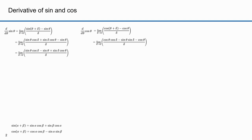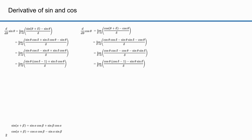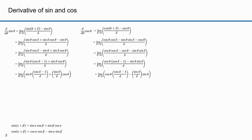I'm going to rearrange terms in the numerator in the sine equation, moving minus sine theta to the middle. I'll do a similar thing with the cosine equation, placing cosine theta in the middle. In the sine case I'll factor out sine theta from the first two terms in the numerator. In the cosine case I factor out cosine theta from the first two terms. Then I express these as separate fractions, factoring out sine theta in the first fraction and cosine theta in the second, and doing the same for the cosine equation.